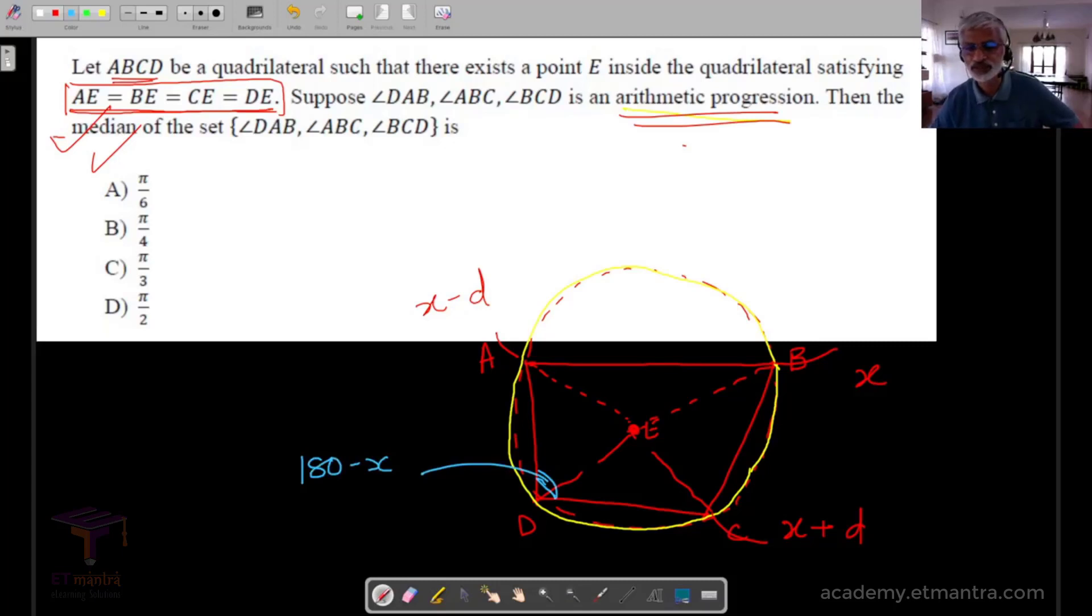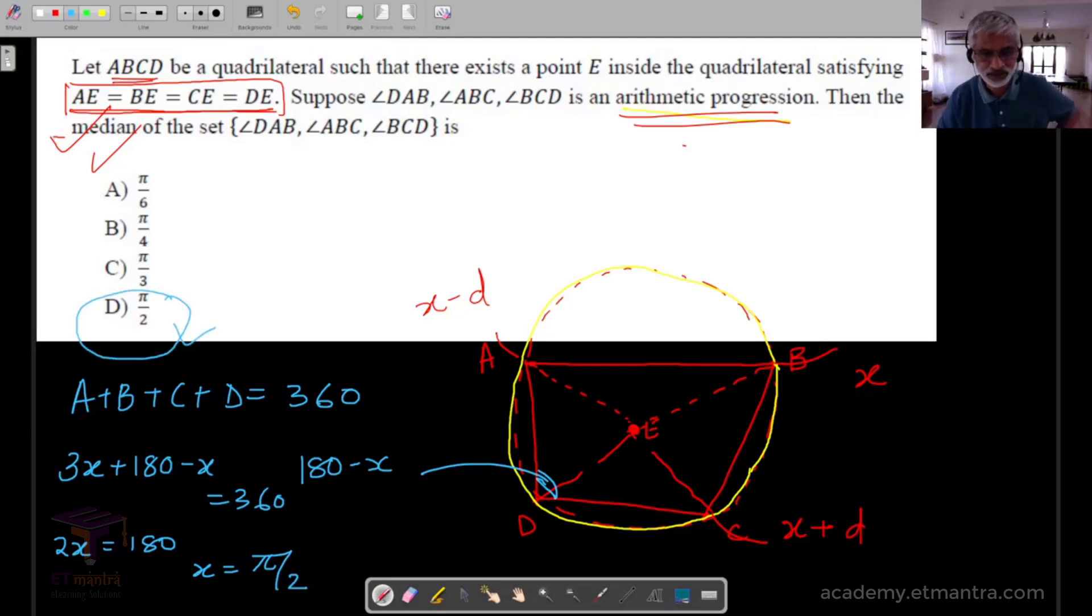And this angle obviously will be equal to 180 minus x because it is a cyclic quadrilateral. And from now on it is rather simple. The sum of the angles in a quadrilateral add up to 360, and this means in this problem it is 3x plus 180 minus x is equal to 360. This quickly gives us 2x is equal to 180 and x is equal to π/2. So once again, rather reasonably nice problem.